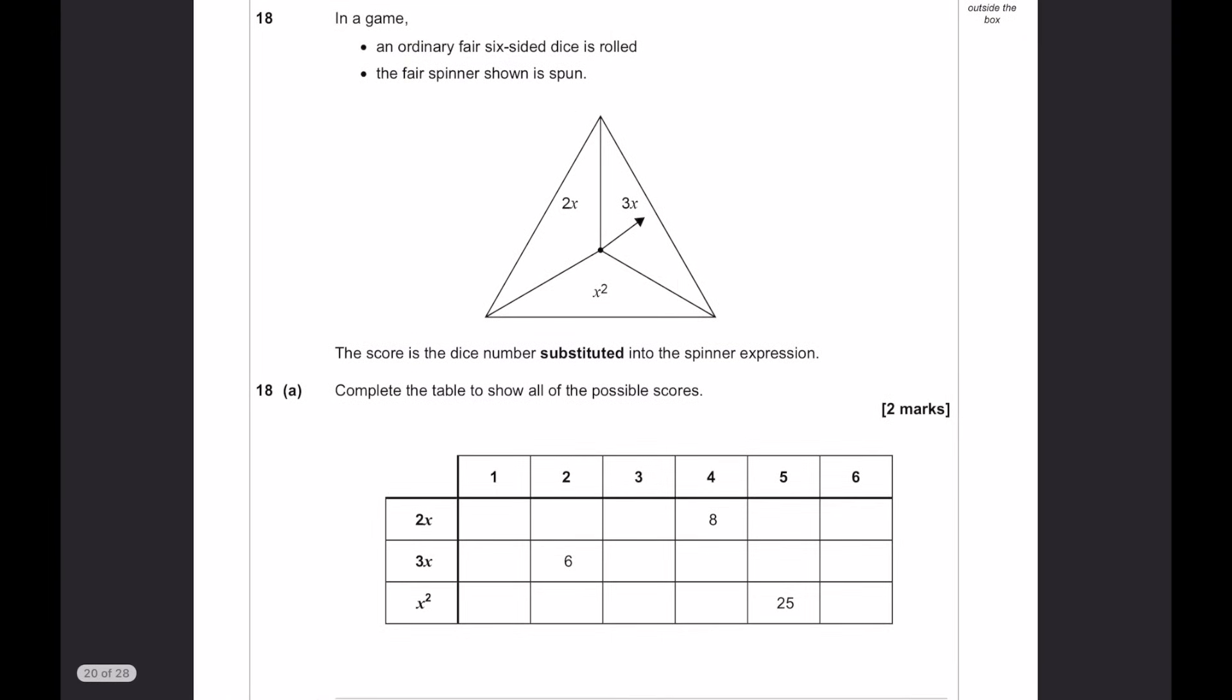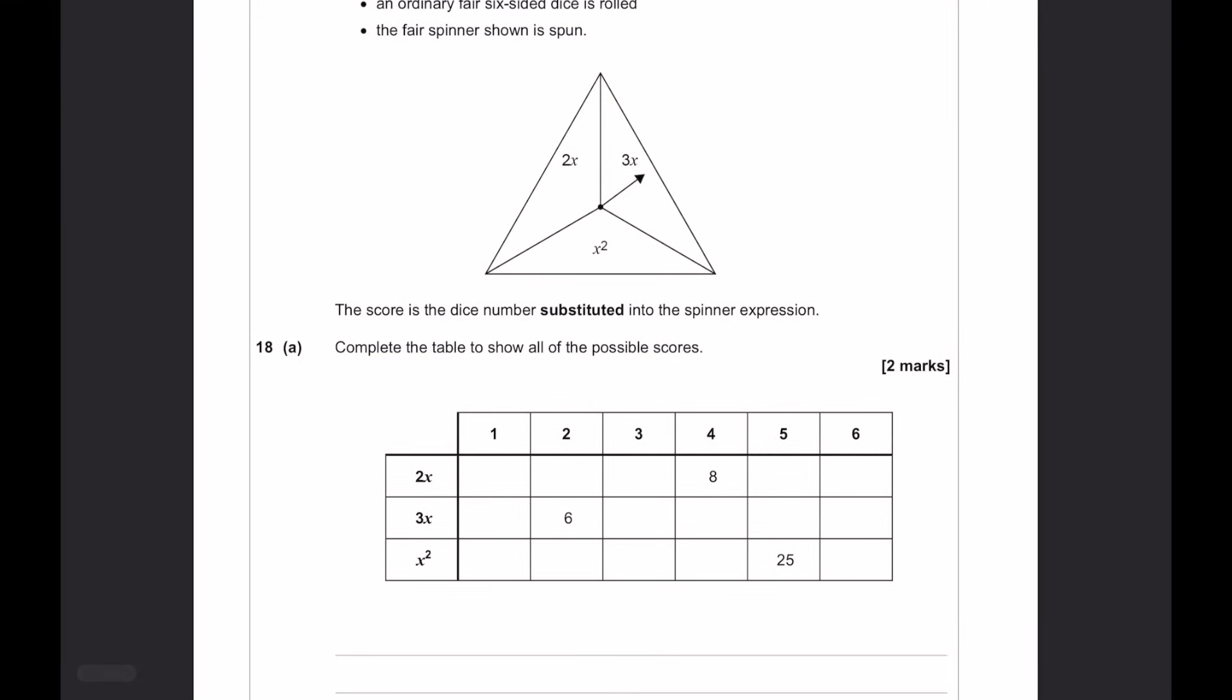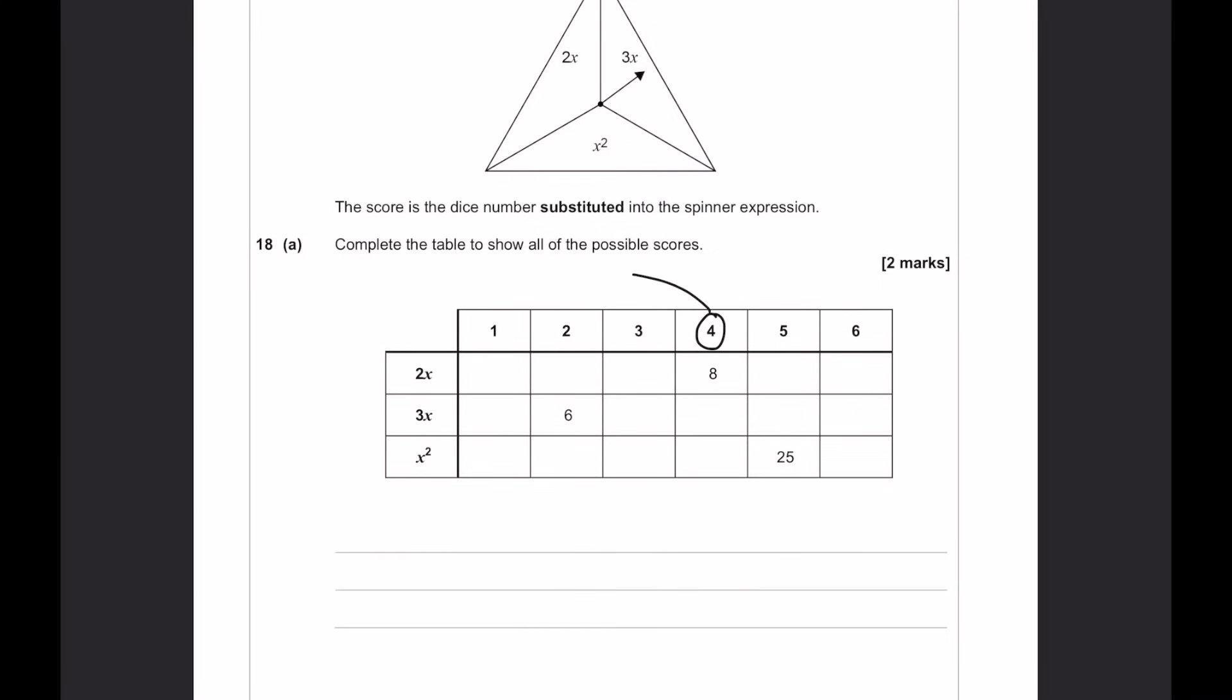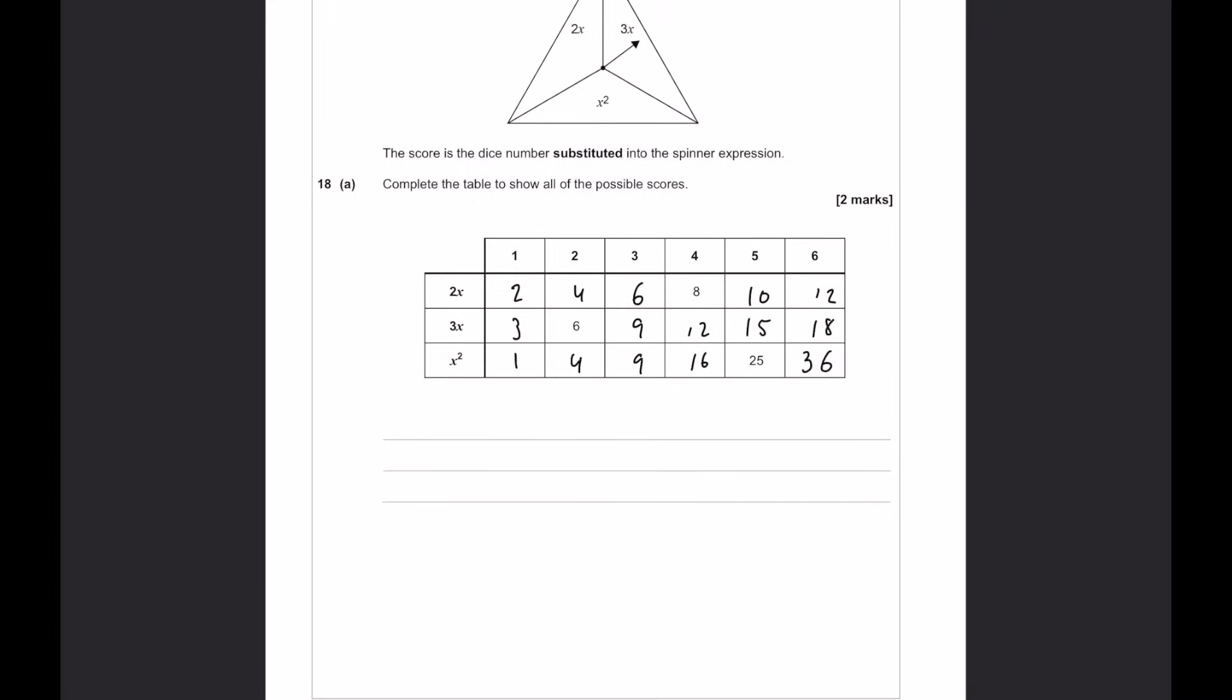In a game, an ordinary, fair, six-sided dice is rolled. The fair spinner shown is spun. The score is the dice number substituted into the spinner expression. Okay, so what this means is, if you get a 4 on the dice, then here, 2 times that number, so it's doubled. So, we can quickly go ahead and fill in all of these. 2, 4, 6, 8, 10, and 12. 3x is the same, but just tripled. So, you can see here we've got 3, 6, 9, 12, 15, and 18. And then finally, x squared is going to be where we want to square the number. So, 1, 4, 9, 16, 25, and 36. And I suppose if you want to do any workings, you can down below.